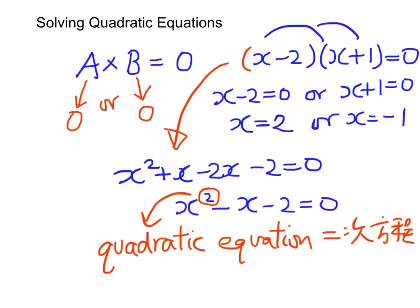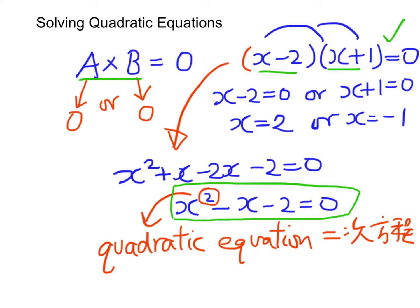So if we are required to solve this quadratic equation, we have to work our way backwards. We have to factorize the left-hand side, and then make the other side zero, and then apply this rule: if the product of two numbers is zero, then either the first factor or the second factor will be zero. And finally we will come up with two answers — usually two answers for a quadratic equation.